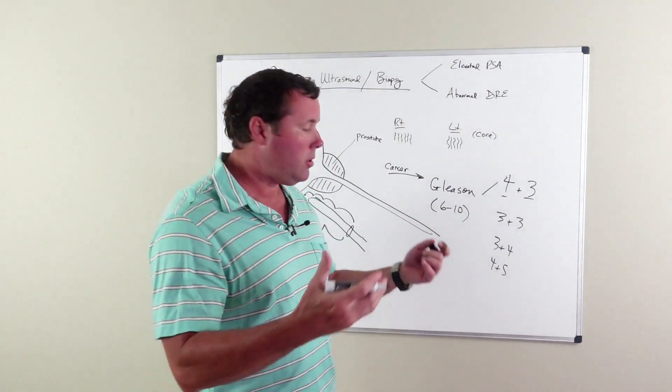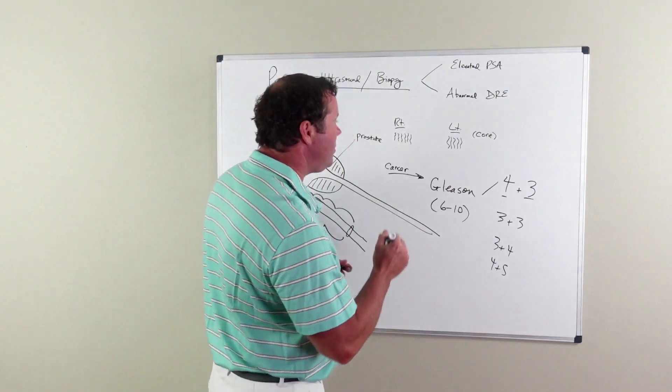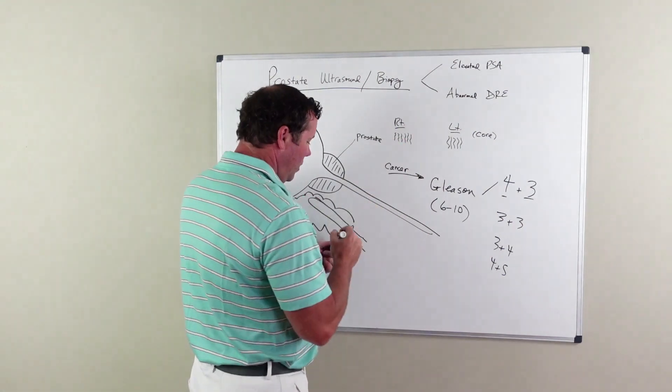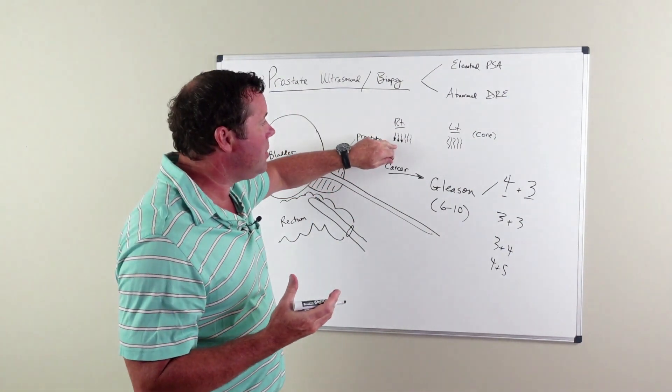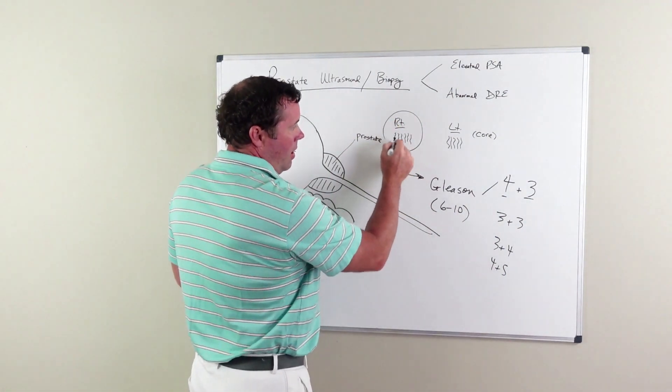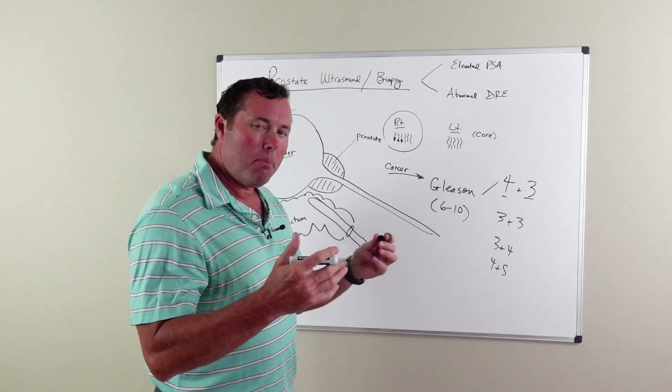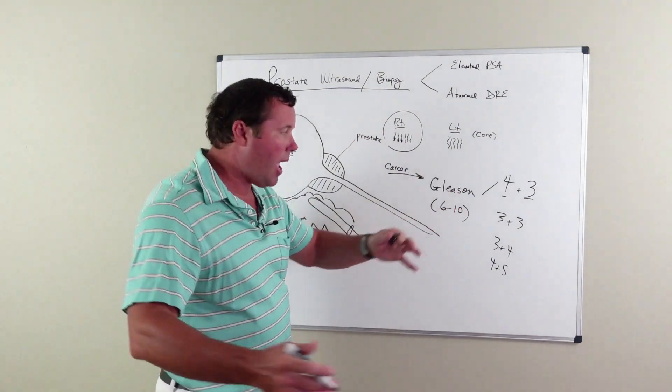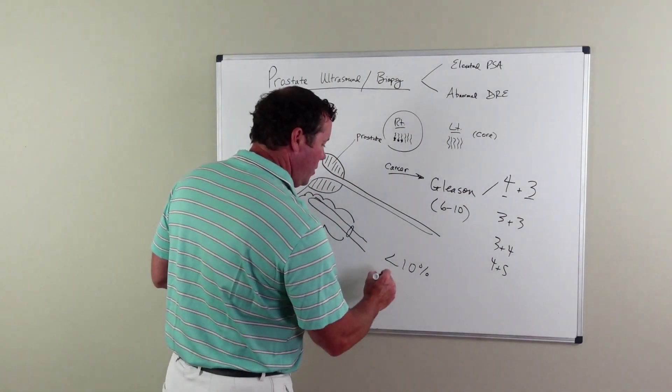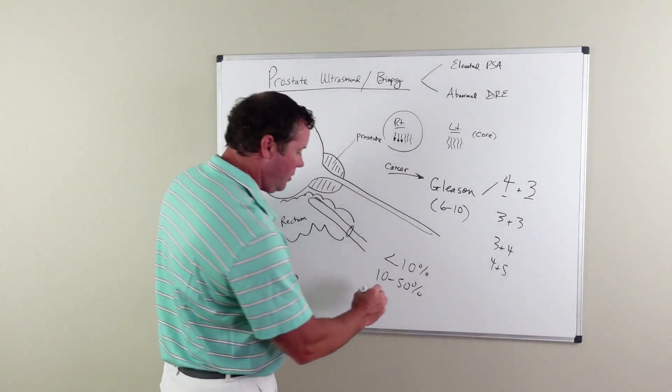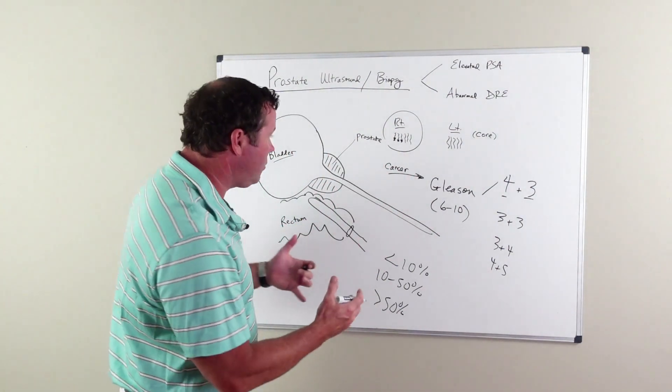The goal of that Gleason score is just to tell you the aggressiveness of cancer. The second thing the biopsy will show you is the amount of cancer that's present on the biopsy. The pathologist will look at these specimens and say how much cancer is present. You want to translate that into an overall volume of cancer - is it less than 10% of the specimen, 10 to 50%, or greater than 50%?